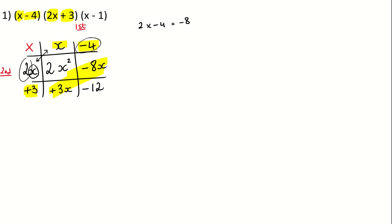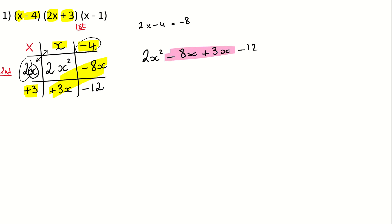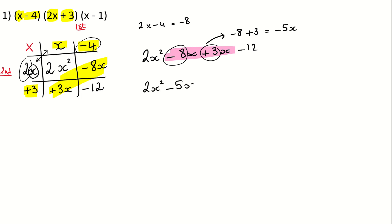Now remember, those two are like terms, so they have to be simplified. So you've got 2x squared minus 8x plus 3x minus 12, and those have to be simplified because they are alike. If that is difficult, just type what you see in the calculator, forgetting the x. So minus 8 plus 3 gives you minus 5. To that, you add your x. So when we simplify it, we get 2x squared minus 5x minus 12.